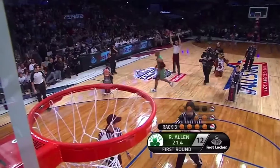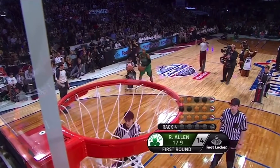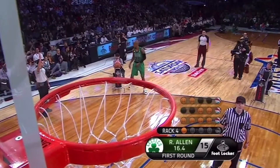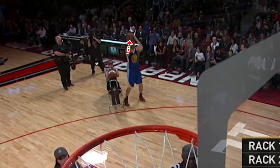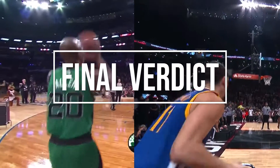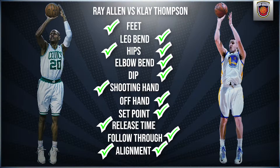The final section is alignment. If your shooting arm is pointing too far inward or outward, it will negatively affect the direction of your shot. For most shooters, a small bend inwards with the forearm is the most natural and beneficial alignment. Both Klay and Ray have their shooting form slightly bent inwards, so they both earn a point in this category.